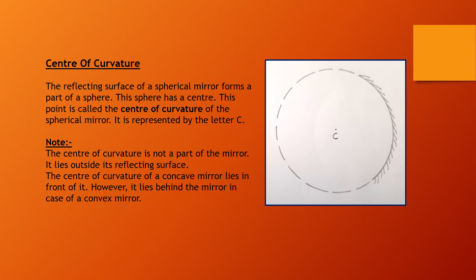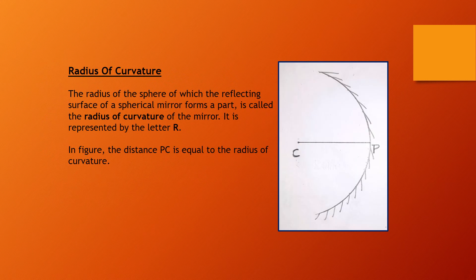Radius of curvature: the radius of the sphere of which the reflecting surface of a spherical mirror forms a part is called the radius of curvature of the mirror. It is represented by the letter R. In the figure, the distance PC is equal to the radius of curvature.